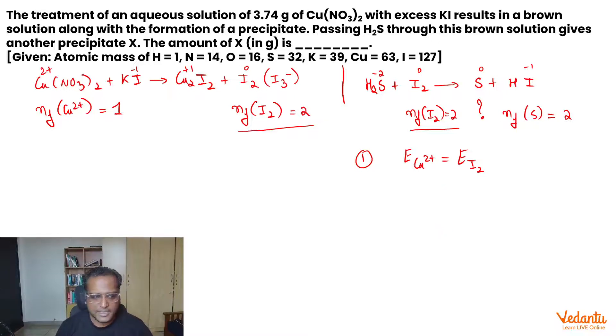Right? Equivalence of Copper 2+ will be written as number of moles of Copper 2+ into n-factor, that's 1, which will be equal to number of moles of I₂ into the n-factor, that's 2.